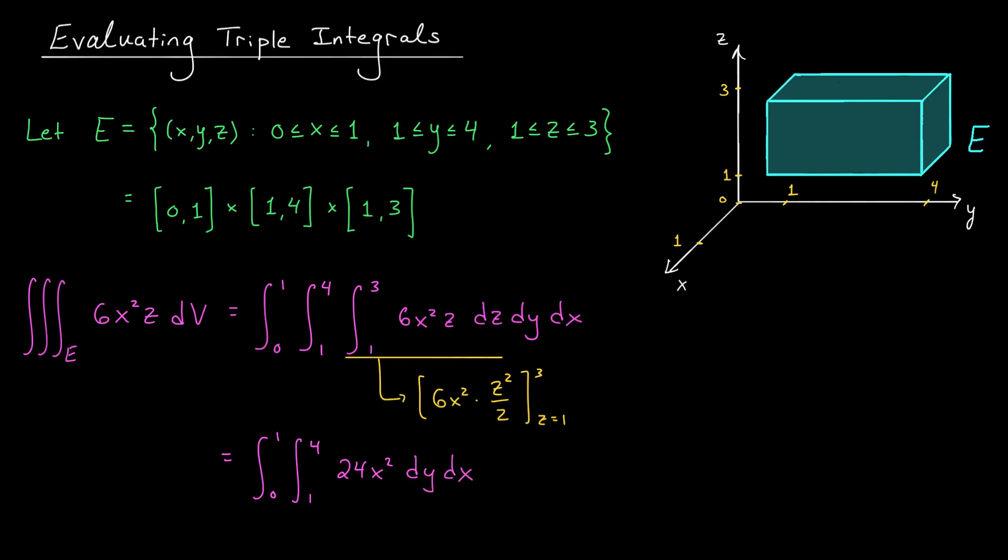At this point, we have a very straightforward double integral. As an exercise, go ahead and work through the remainder of the calculation. You should obtain a final answer of 24. In this case, we might interpret the result as the total mass of E, say in kilograms, assuming a mass density at each point (x,y,z) of 6x²z kilograms per meters cubed.